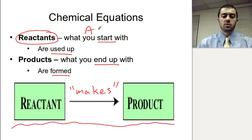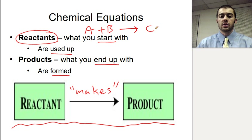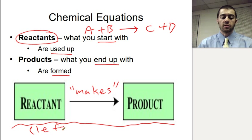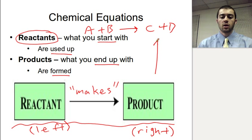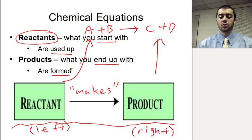For example, if we have elements A plus B making C plus D, then A and B would be the reactants because they're on the left side of the equation. The products are whatever is on the right side — what's being made. So we're making C and D here, so they are products, and we're using up A and B, so they are the reactants. You definitely need to know the basic parts of a chemical equation.